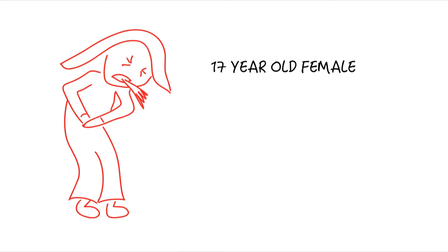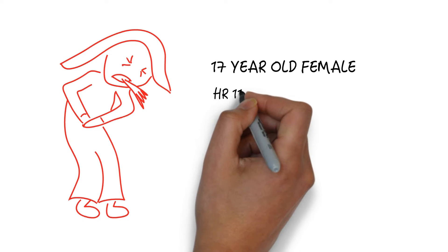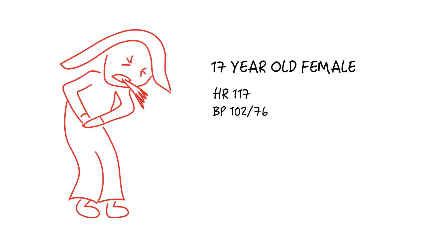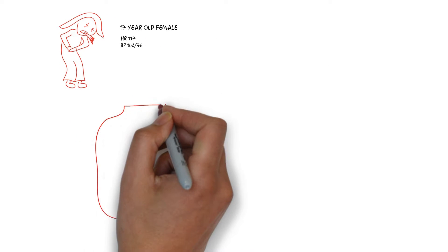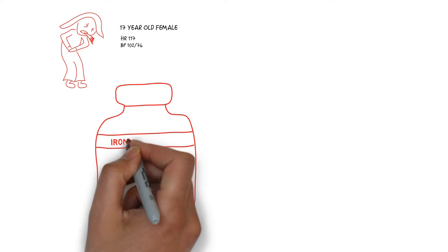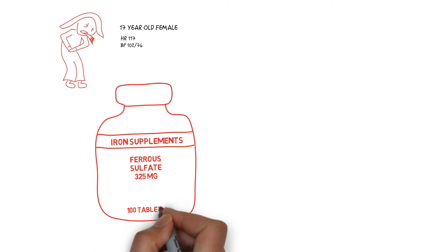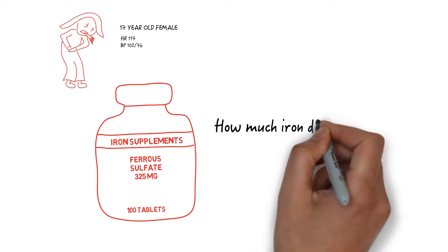On her arrival you note she is tearful, actively vomiting with some blood tinge to her emesis. Her heart rate is 117 beats per minute. Her blood pressure is 102 over 76. EMS hands you an empty bottle. You note the pills are 325 milligrams each of ferrous sulfate. How much iron did she take?